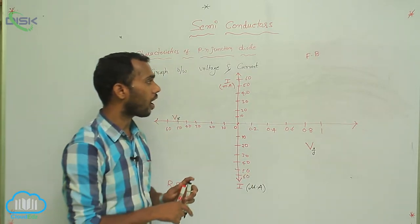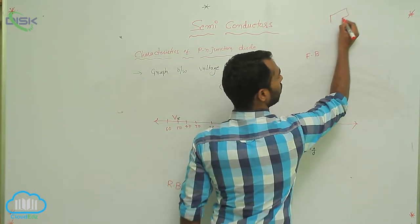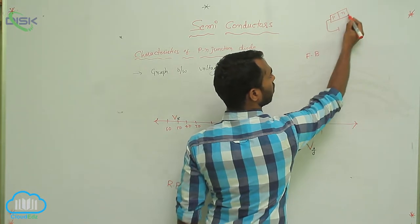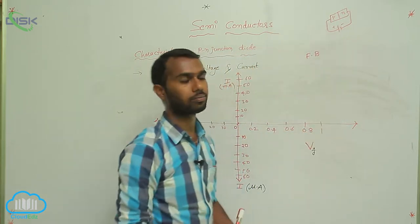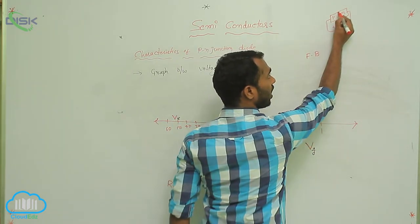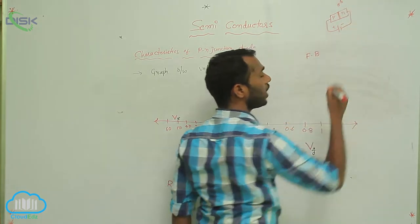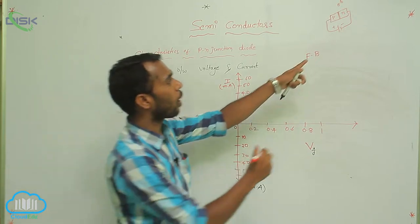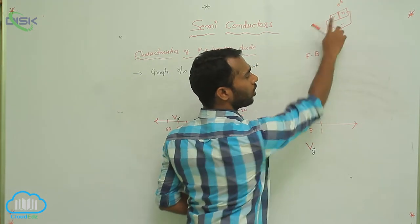If I draw a graph, I already told you the depletion layer is there. It is a P region and it is an N region. If we connect in forward bias, P connected to positive terminal and N connected to negative terminal. Now, this PN junction has a depletion layer. The depletion layer width corresponds to around 0.6 volts. Below 0.6 volts, if you apply the voltage, it does not change anything.